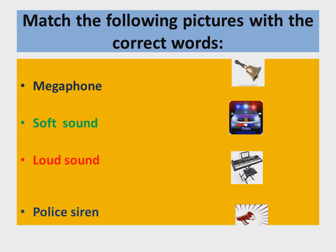First, read the spellings. Megaphone: M-E-G-A-P-H-O-N-E. Next: soft — S-O-F-T — soft sound. Next: loud — L-O-U-D — loud sound. And the last one: police — P-O-L-I-C-E — siren — S-I-R-E-N — police siren.